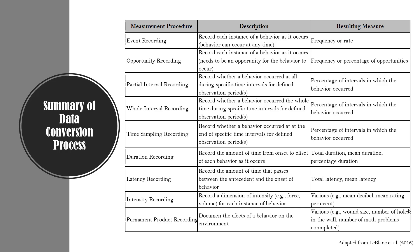Now let's talk about taking data and converting it to a form you can graph. For event recording — a continuous recording procedure where you record each instance of a behavior as it occurs — you typically measure frequency or rate. Use frequency if your observation periods are the same length of time. If observation periods differ in length, convert frequency to rate. That resulting measure is what goes on your y-axis.